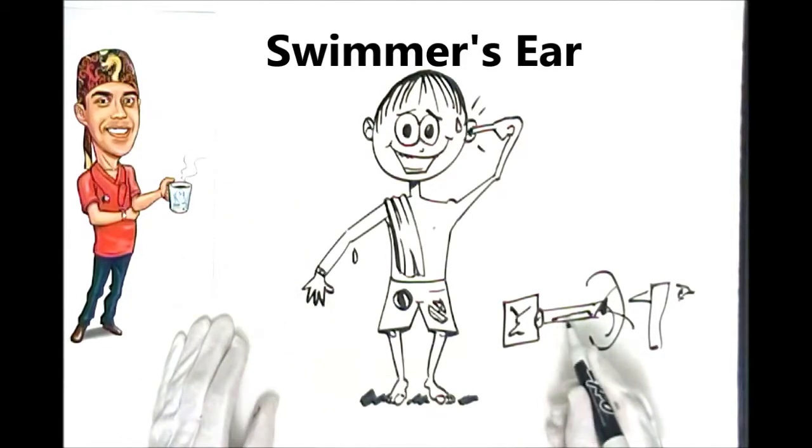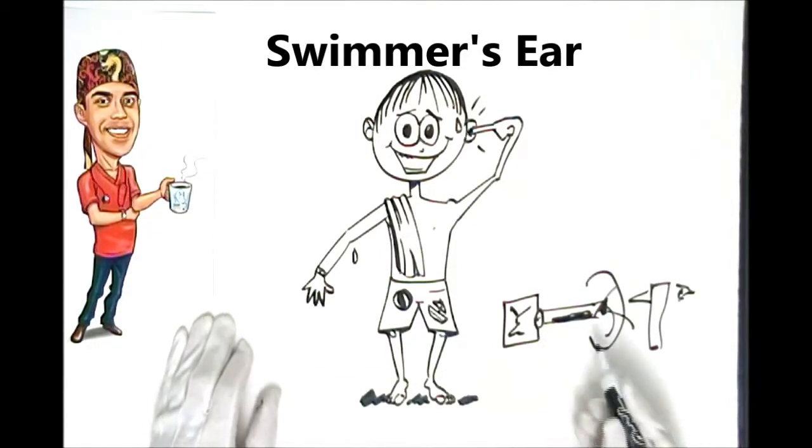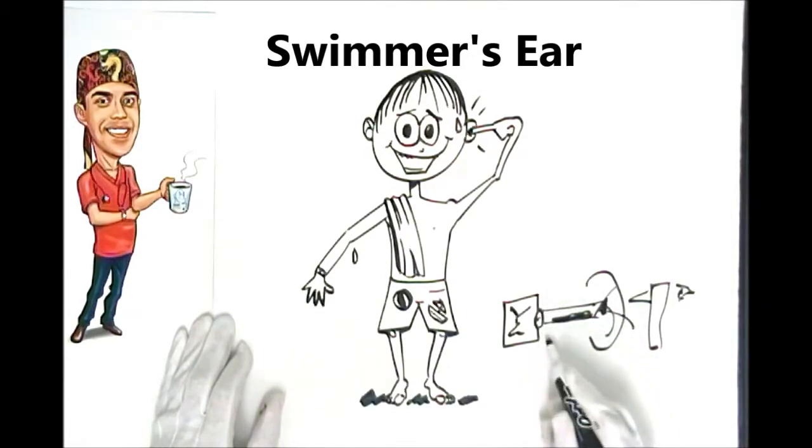And just like any stagnant pond, how it starts to smell, bacteria start to live in the area. And then that sets up an inflammatory reaction and an infection of the ear canal. So that in essence is what a Swimmer's Ear is. It's very simple. It's basically just a bacterial infection of your ear canal, not involving the middle ear.